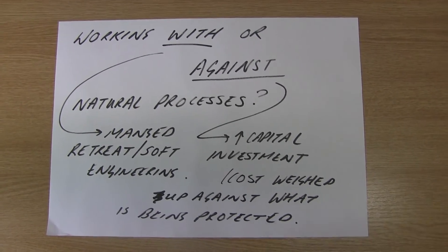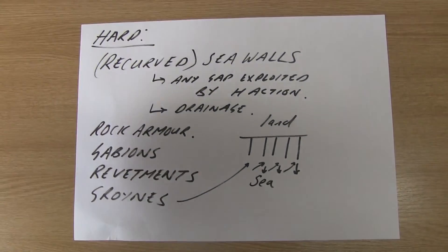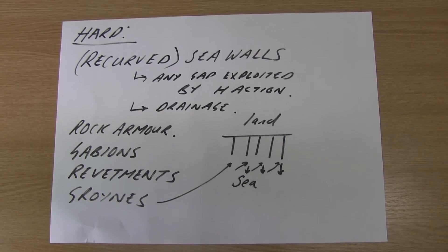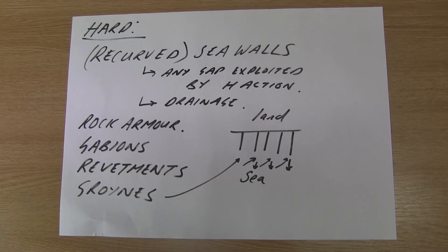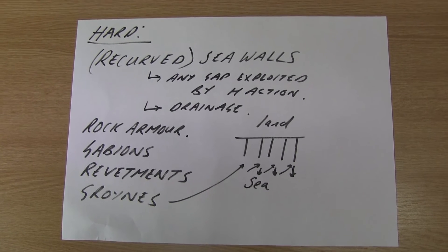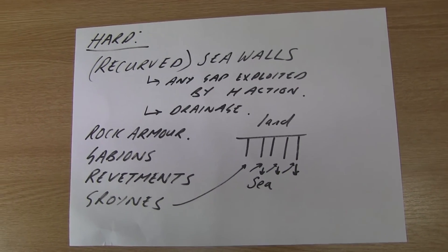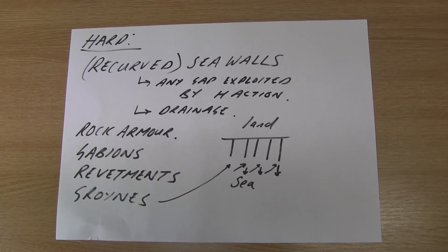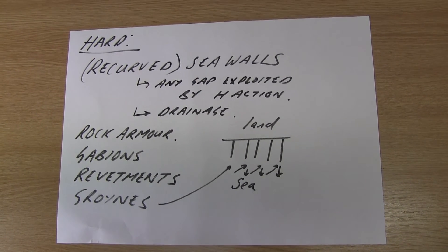For hard engineering — you'll be familiar with most of these. Seawalls are sometimes recurved so they reflect or refract back the power of advancing waves. They need to be solid — any gaps and hydraulic action will get in — and they must be properly drained so water doesn't build up behind them. Riprap or rock armour consists of large boulders, often resistant Norwegian granite, placed at the foot of a cliff to absorb wave power. Gabions are similar but boulders wrapped in mesh. Revetments are wooden barriers parallel to the land, absorbing wave energy and trapping sediment. Groins trap sediment moved by longshore drift, building up a bigger beach.